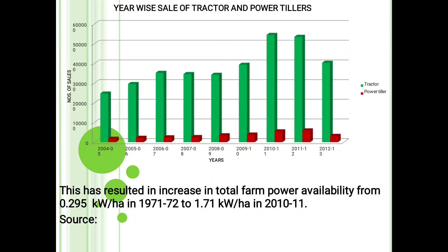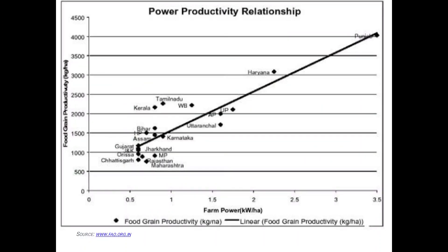This has resulted in an increase in total farm power availability from 0.295 kilowatt per hectare in 1971-72 to 1.71 kilowatt per hectare in 2010-2011. This one is the power-productivity relationship shown using food grain productivity in kg per hectare and linear food grain productivity in kg per hectare.